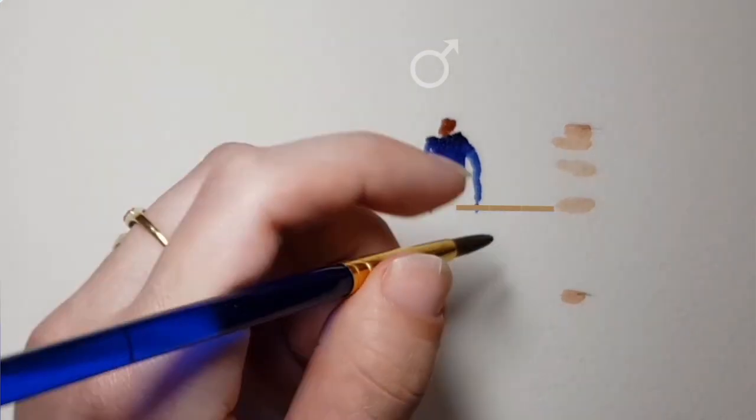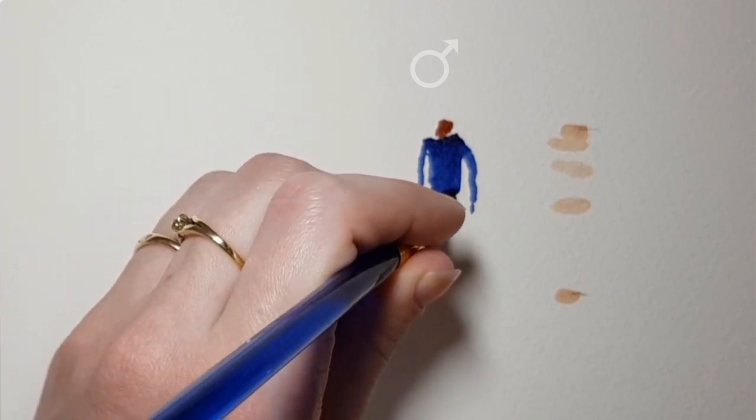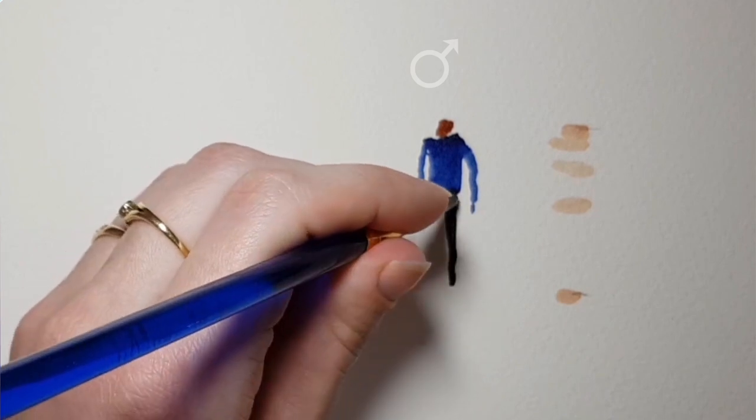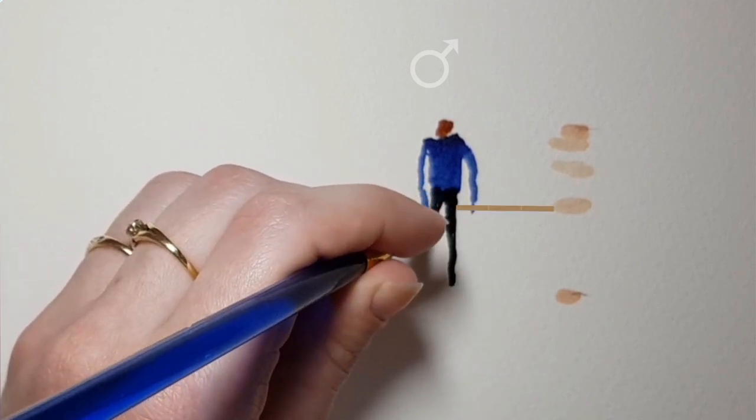I start to draw the pants above the middle line. The crotch, the point where the legs connect to each other, is located in the middle.